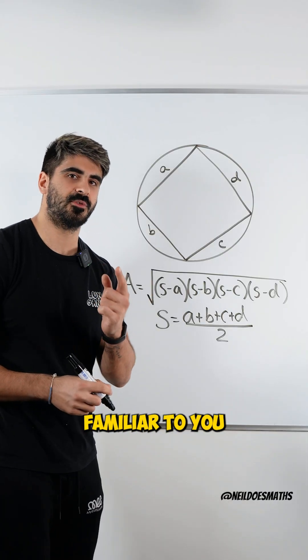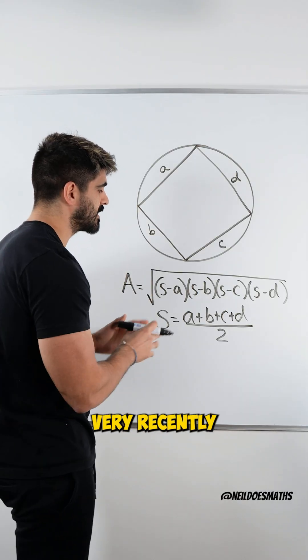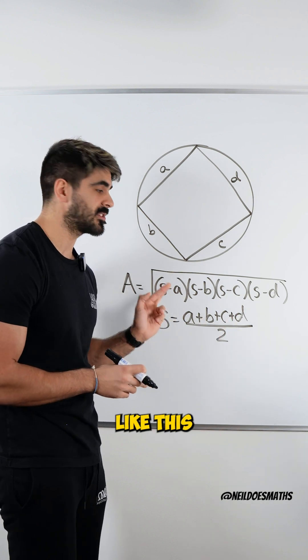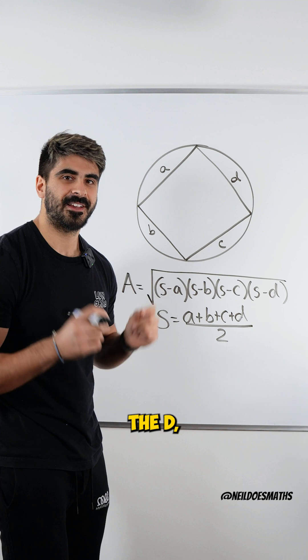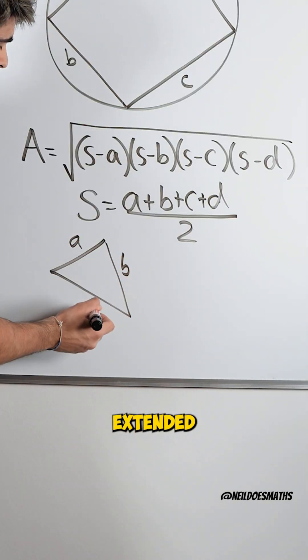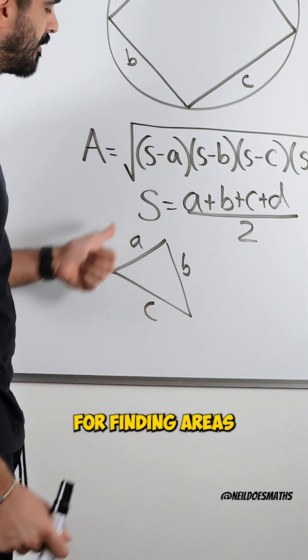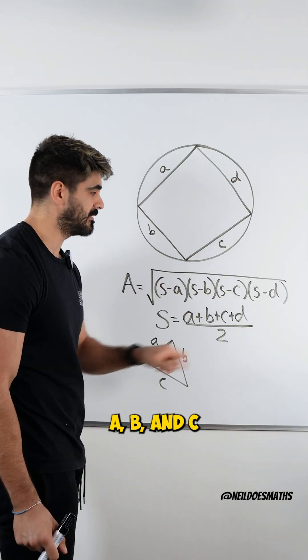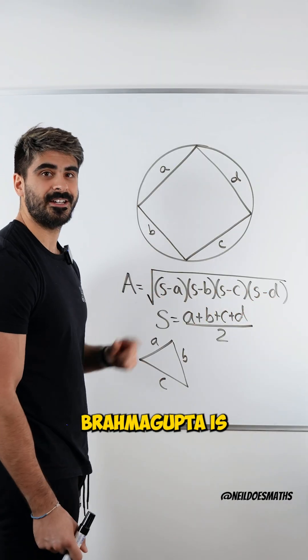Now does it look familiar to you? It should because very recently I showed you a formula that looks exactly like this but without the D. That was Heron's formula. Heron's formula is basically Brahmagupta's formula for finding areas of triangles A, B, and C. D is just zero. Brahmagupta is the OG.